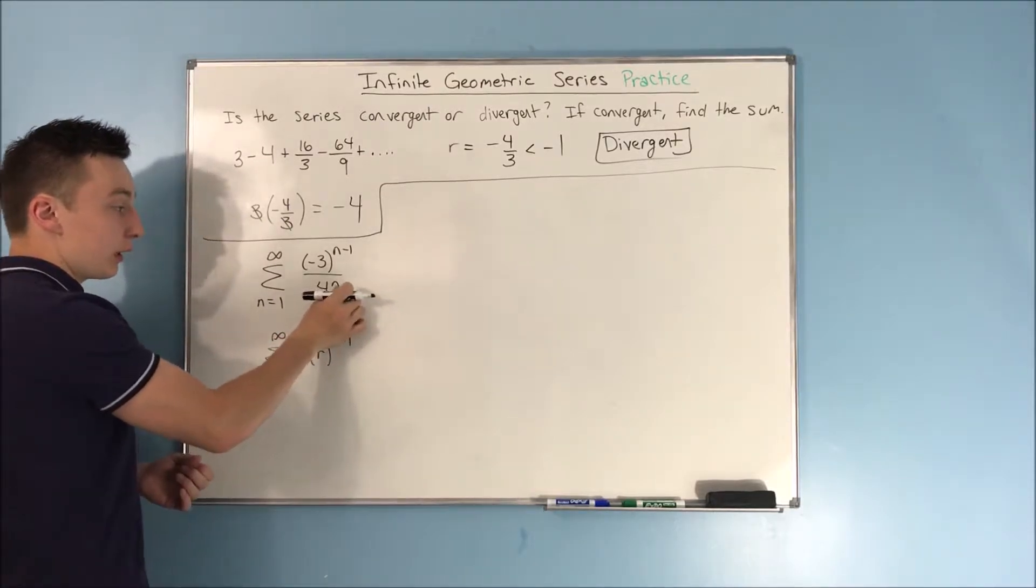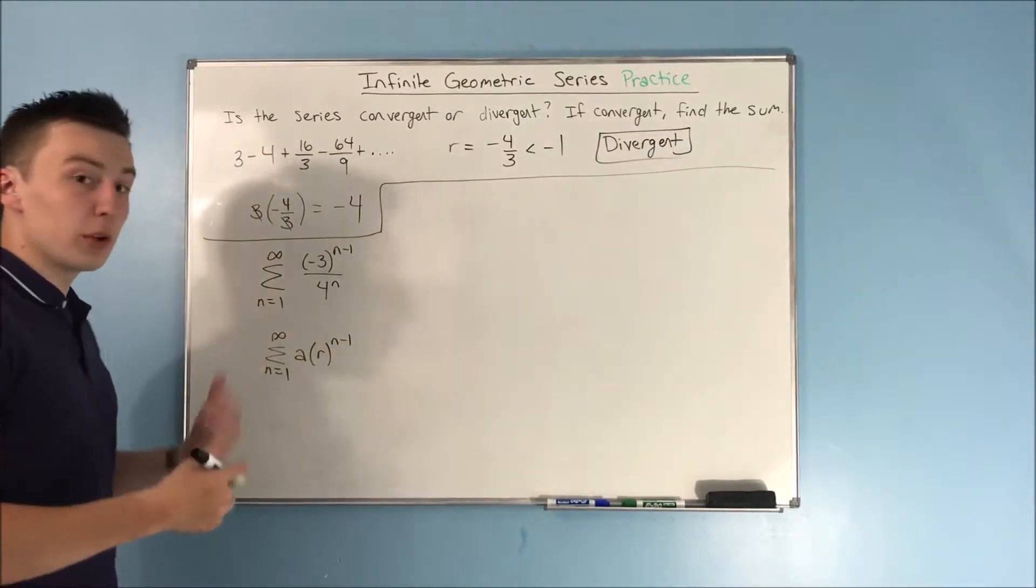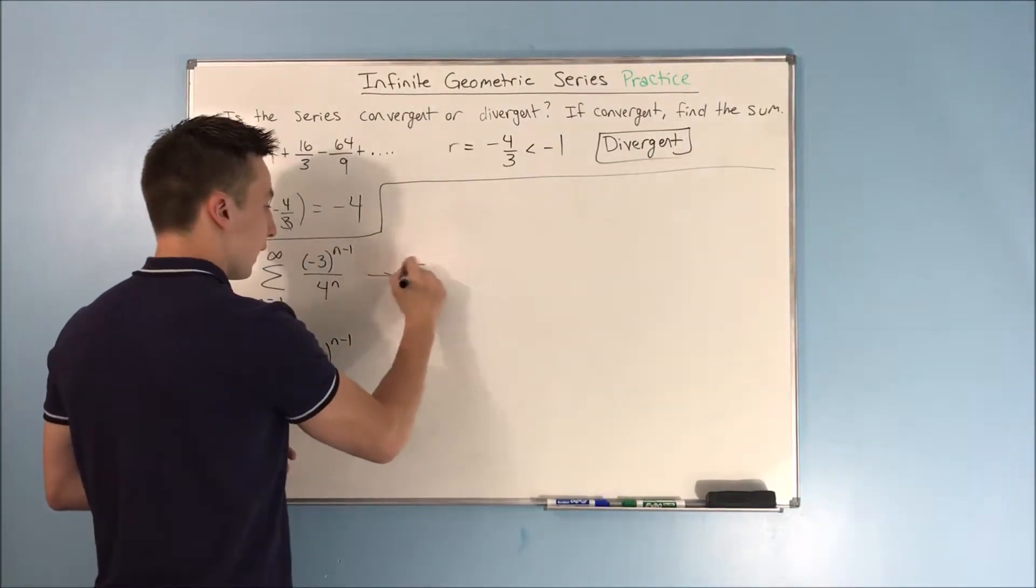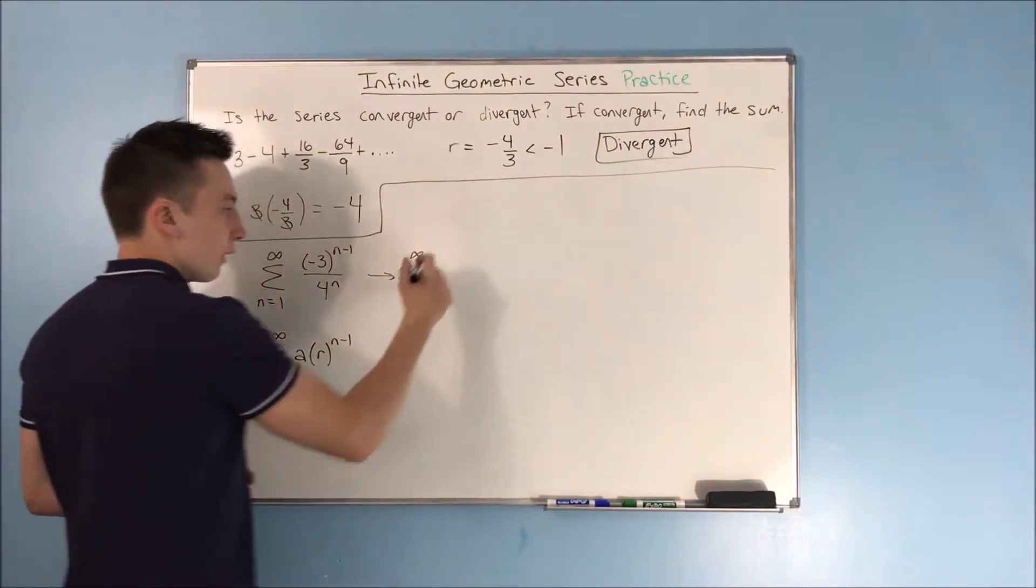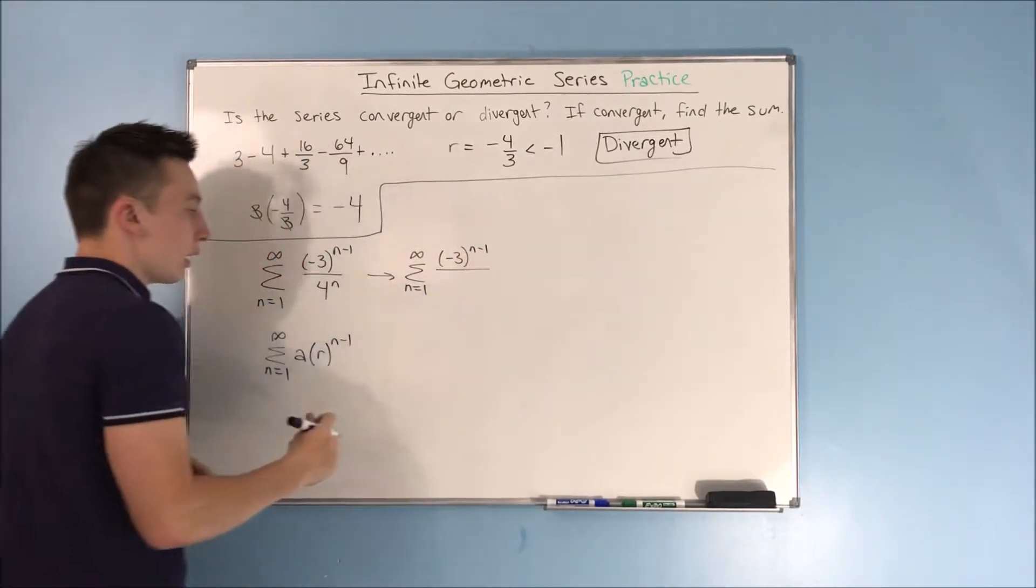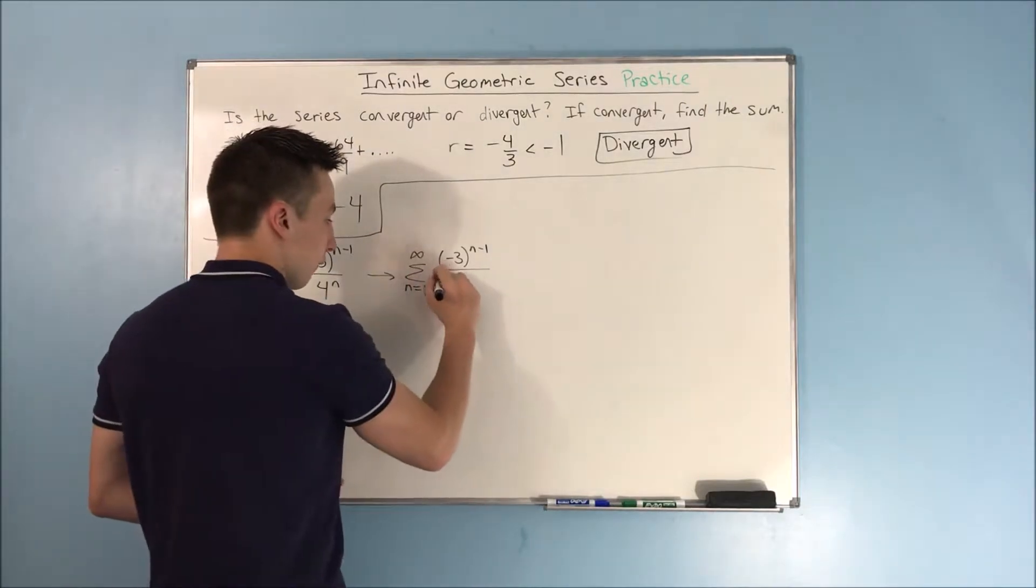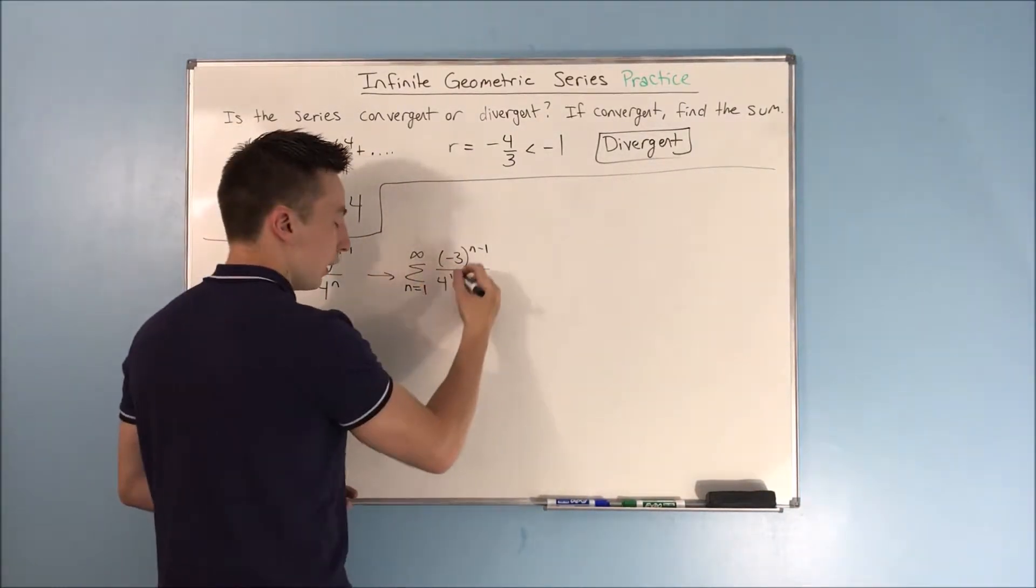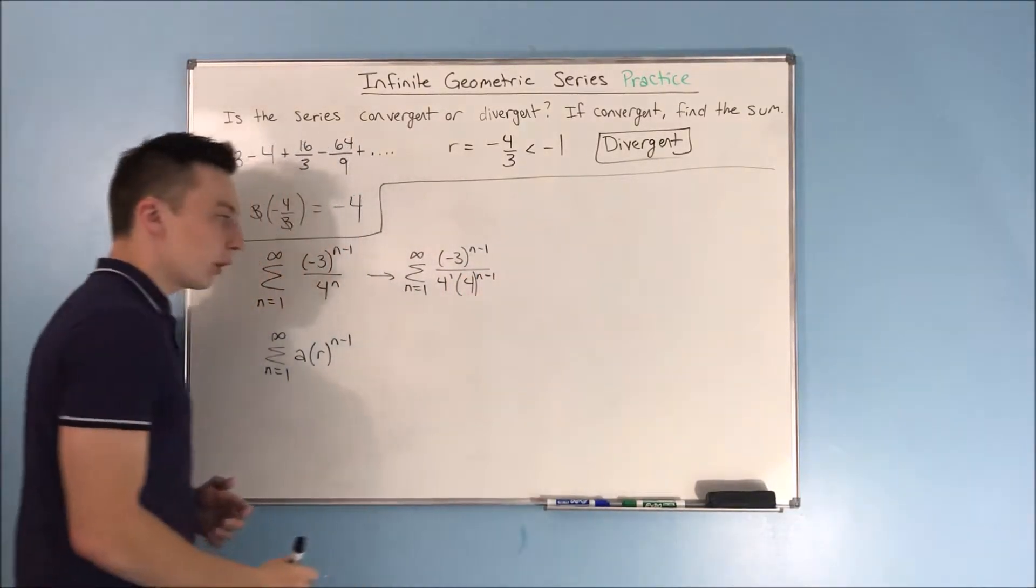Basically, we need to have an n minus 1 here instead of an n. How do we do that? Well, we can break it up using what we know about exponents. We can make this instead the sum from n equals 1 to infinity of, we can keep this negative 3 to the n minus 1, but we can break this 4 to the n apart, and we can get 4 to the 1st times 4 to the n minus 1.